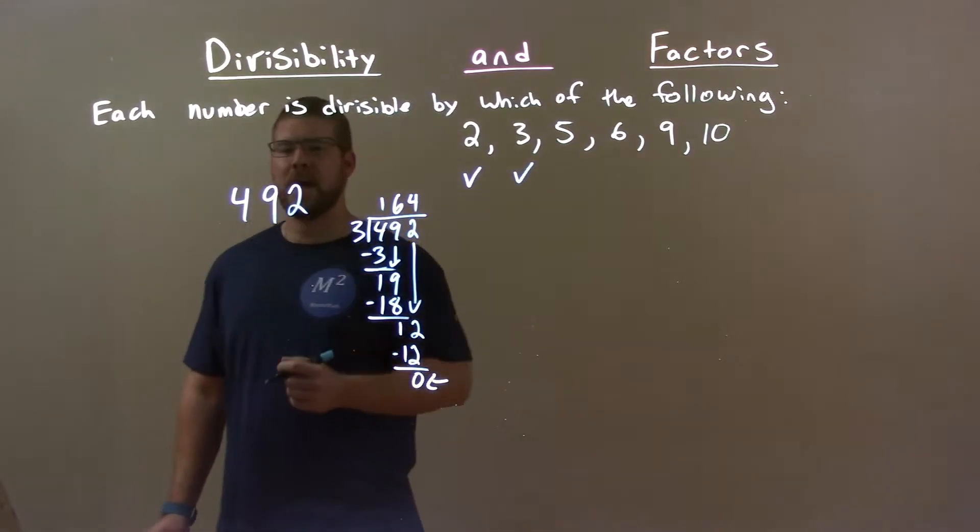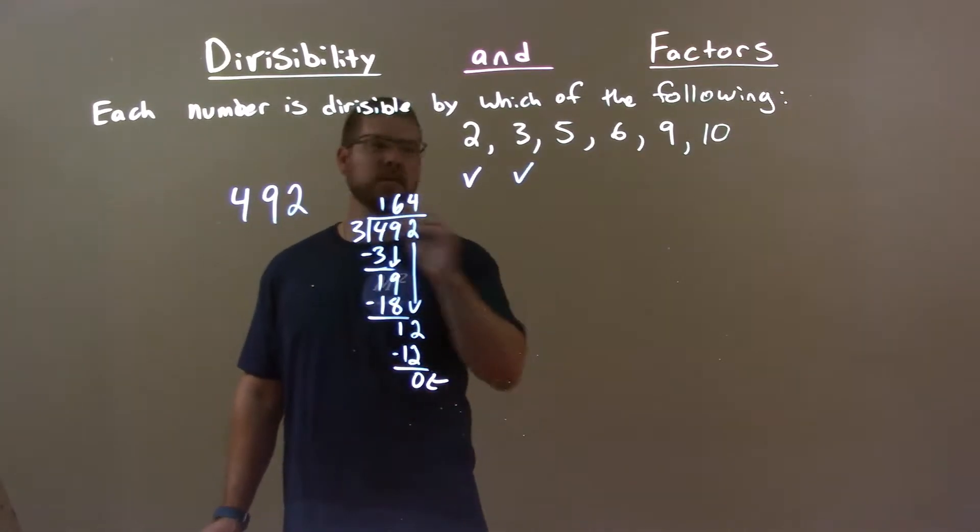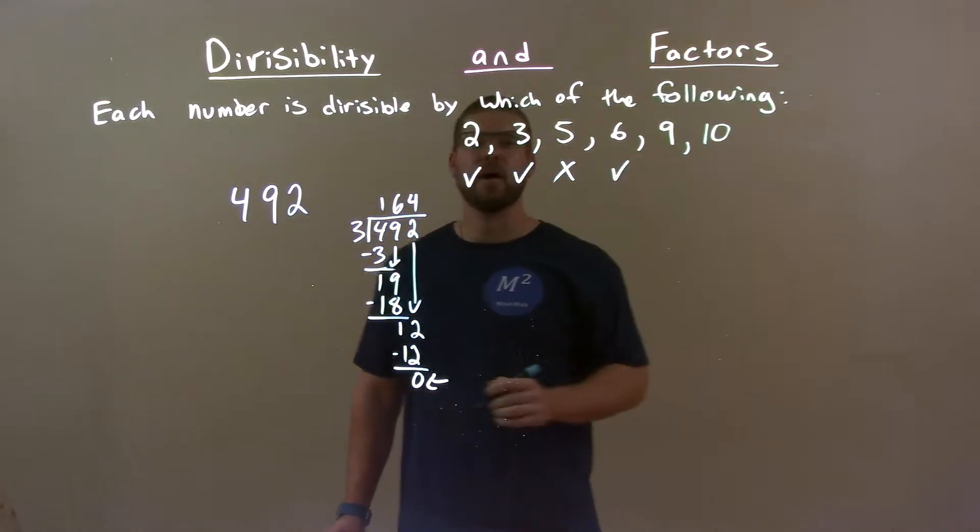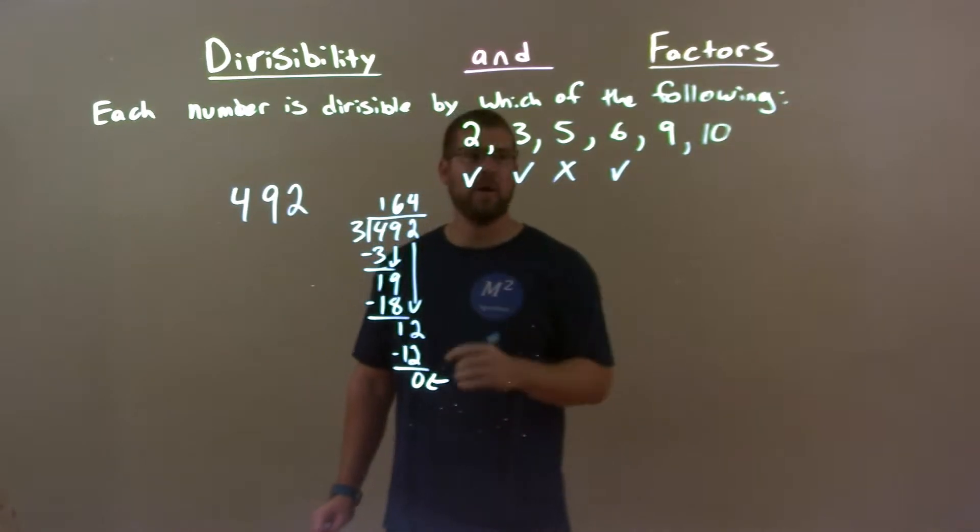5. The number does not end in a 5 or 0. So, 5 is out. Since 2 and 3 both work, 6 must also work as well.